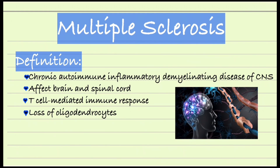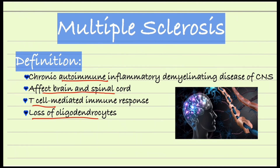Welcome back. In today's video we're going to talk about multiple sclerosis. Multiple sclerosis is the autoimmune demyelination of the central nervous system in which T lymphocytes mainly react to myelin antigens. There is a loss of myelin sheath in the central nervous system and also loss of oligodendrocytes, which are the cells responsible for synthesizing myelin in the CNS. This disease mainly affects the brain and spinal cord. In the peripheral nervous system, myelin is synthesized by Schwann cells, so the peripheral nervous system is spared in this disease.